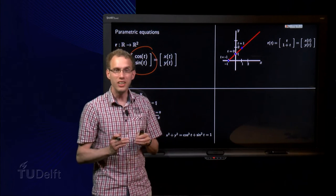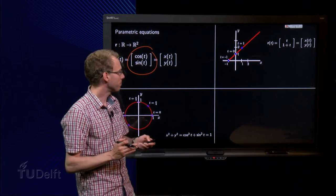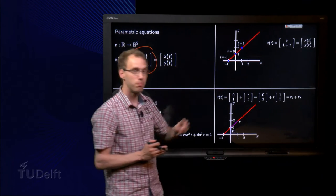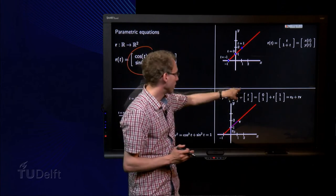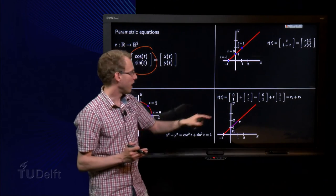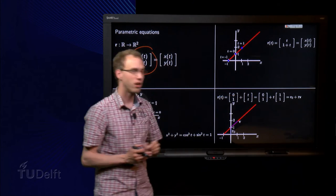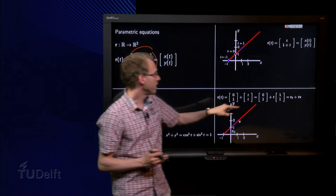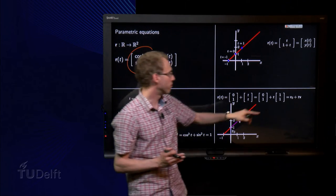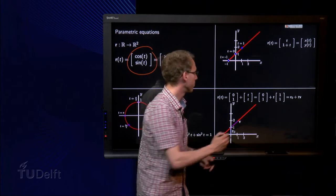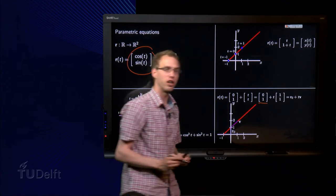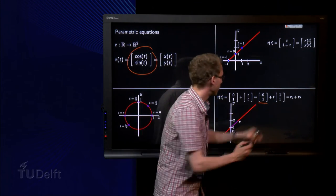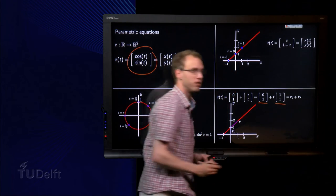Well, we can rewrite this equation slightly. We take the part without t and the part with t. And then we take the t to the front over there. And then we see our parametric equation is of the form of a vector r₀, so here we have r₀ plus t times a vector v. Here we have a vector v.